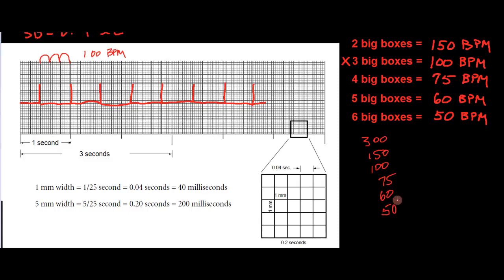You may ask: what if it's slower than six boxes apart? At that point, we're below 50 beats per minute, which is cutting into cardiac output — we can just say it's too slow and we need to do something about it. And what if it's above 300? You're really not going to find any rhythm above 300 beats per minute; the only thing that could be there is ventricular fibrillation. If the patient is in v-fib, our decisions are already made for us regardless of the exact number. So again, please memorize the 300 method: 300, 150, 100, 75, 60, and 50.